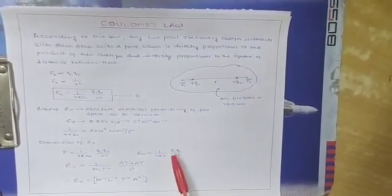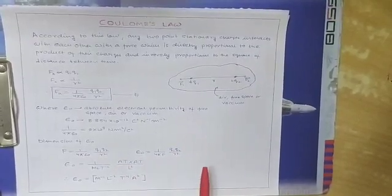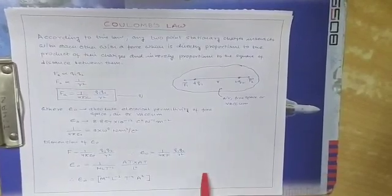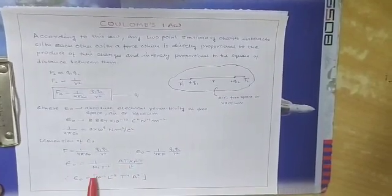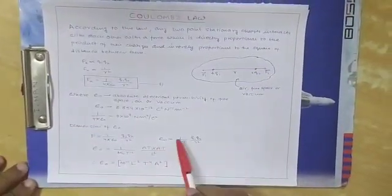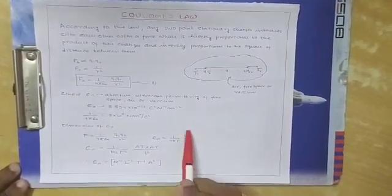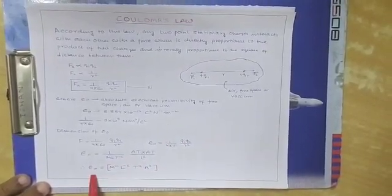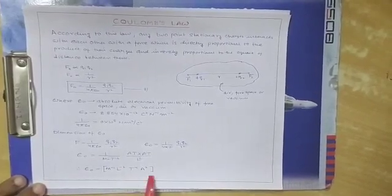The dimension of charge is [AT], since current I = dQ/dt, therefore Q = I × t. Substituting the dimensions of all physical quantities into the expression for ε₀, we arrive at the dimension of ε₀ as M⁻¹ L⁻³ T⁴ A².